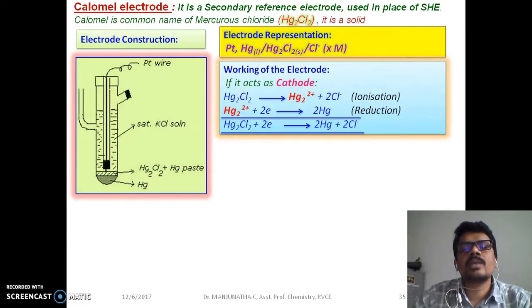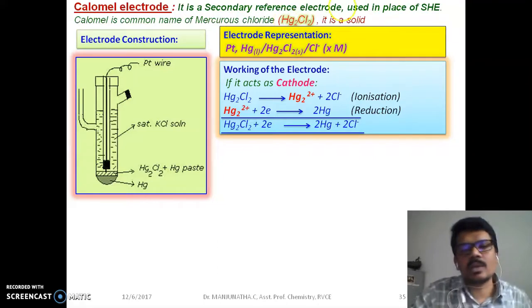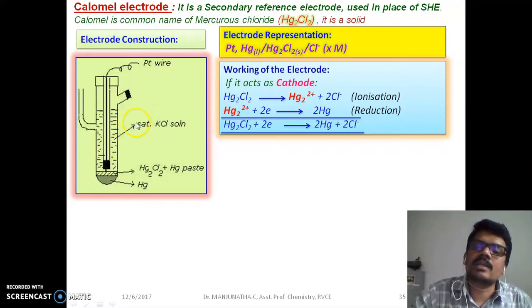Let us look at the working of this electrode. When this electrode is connected to some other electrode which behaves as anode, this calomel electrode acts as a cathode. When it acts as a cathode, we can expect a reduction reaction. It means it should accept electrons.